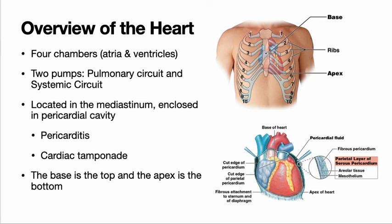First let's start with an overview of the heart. It's got four chambers. The two top chambers are the atria and the two bottom chambers are the ventricles. The ventricles are going to be the more muscular of the four chambers. Essentially we have two pumps going on because the right ventricle is going to pump deoxygenated blood out to the lungs and bring it back into the left atria. The left ventricle is going to pump oxygenated blood out to the body, the peripheral tissues, and then it will come back via the vena cava into the right atrium. So sort of two circuits going on there.